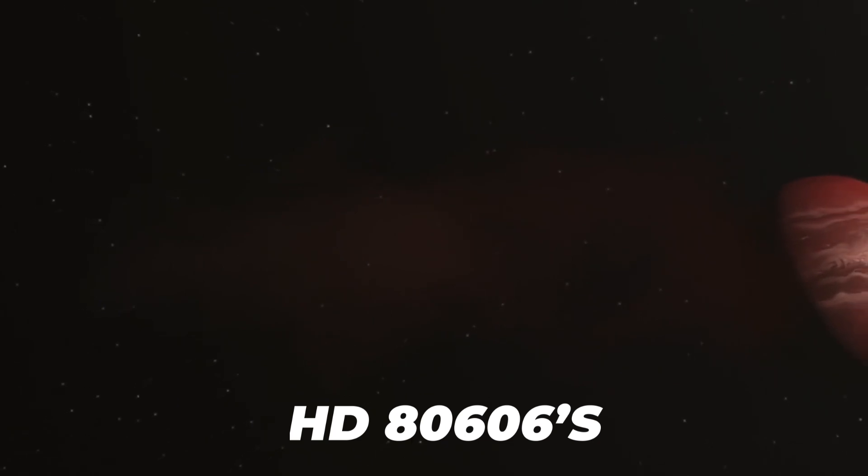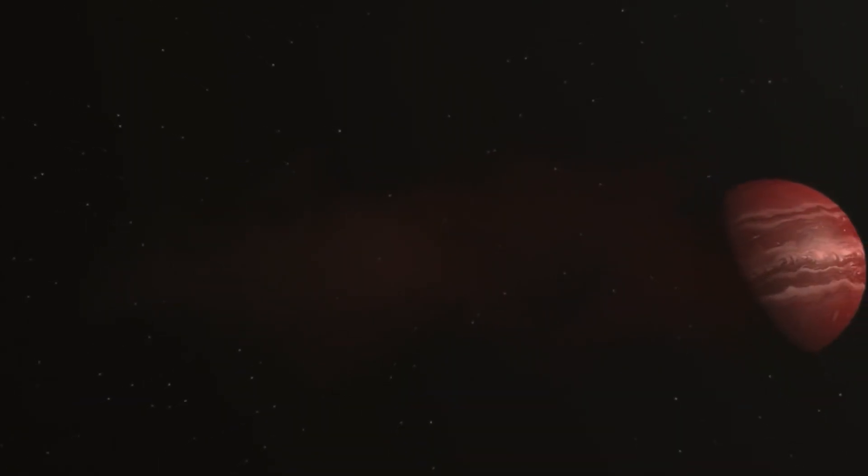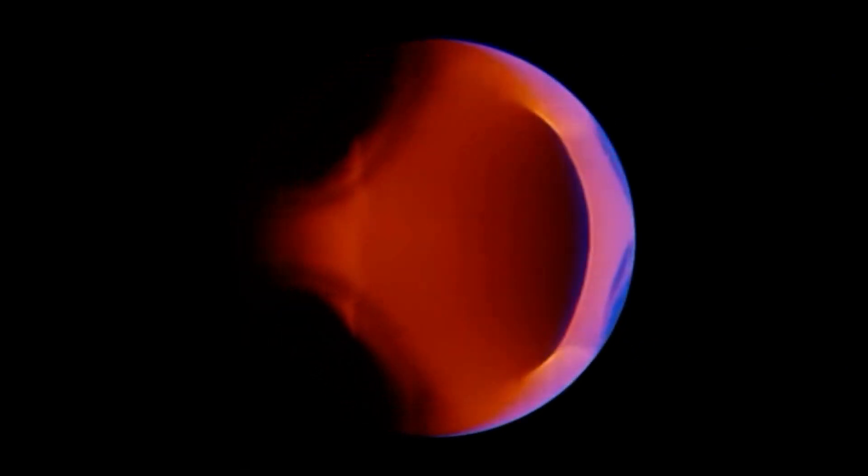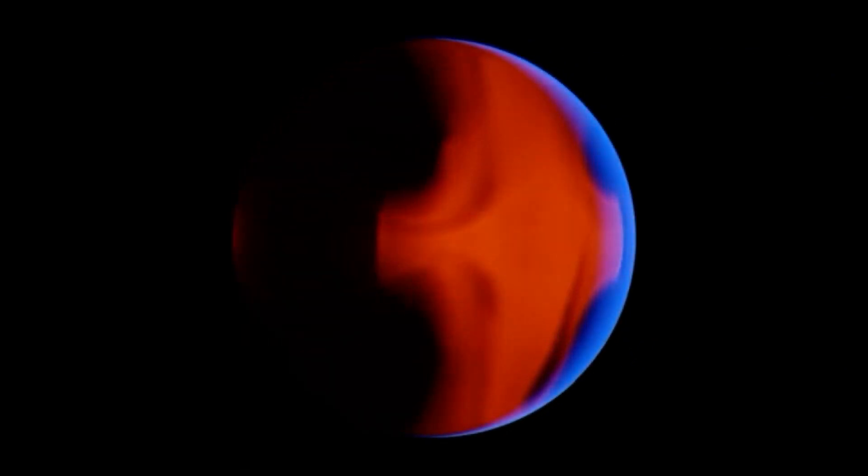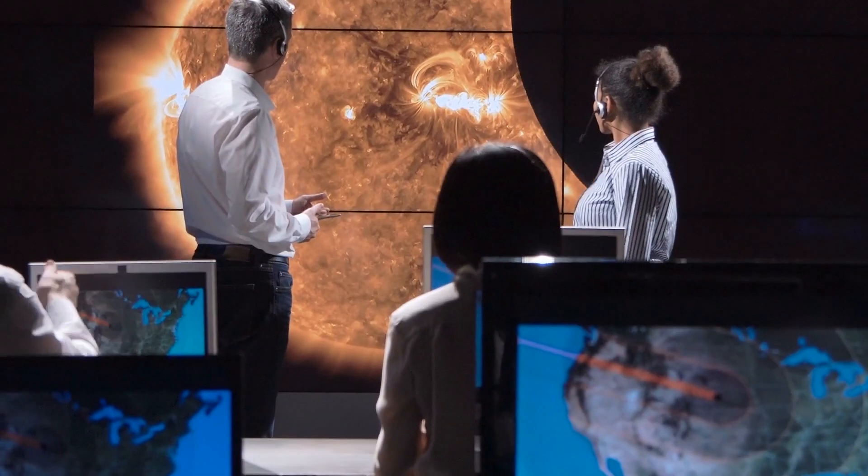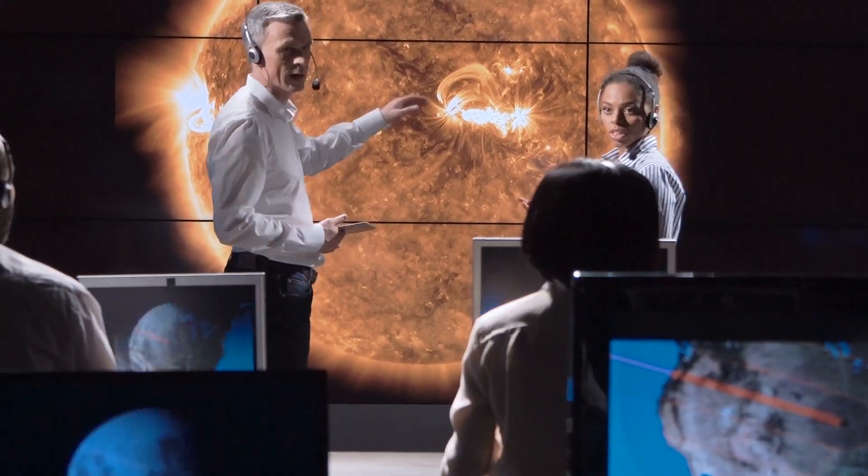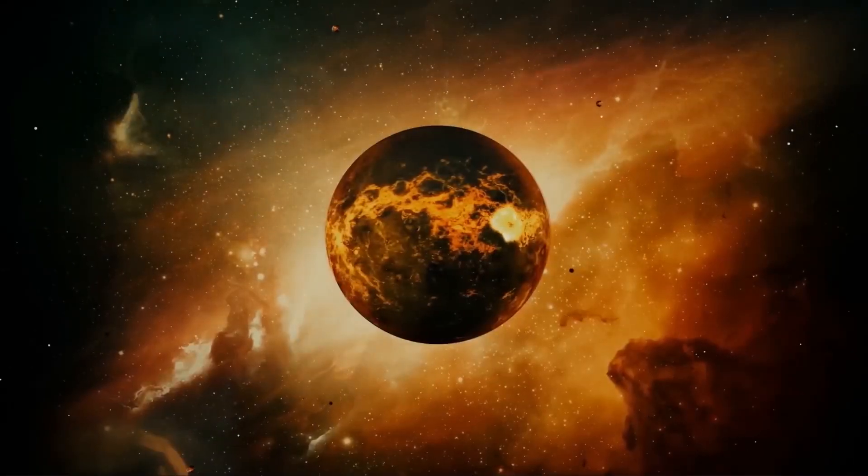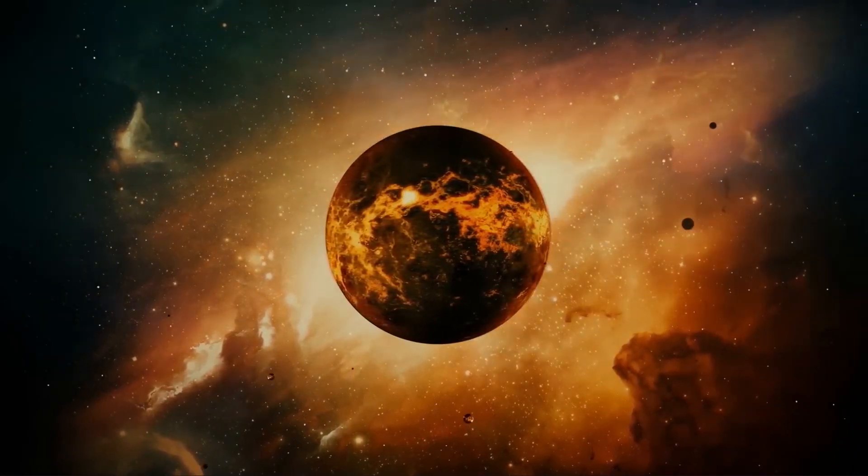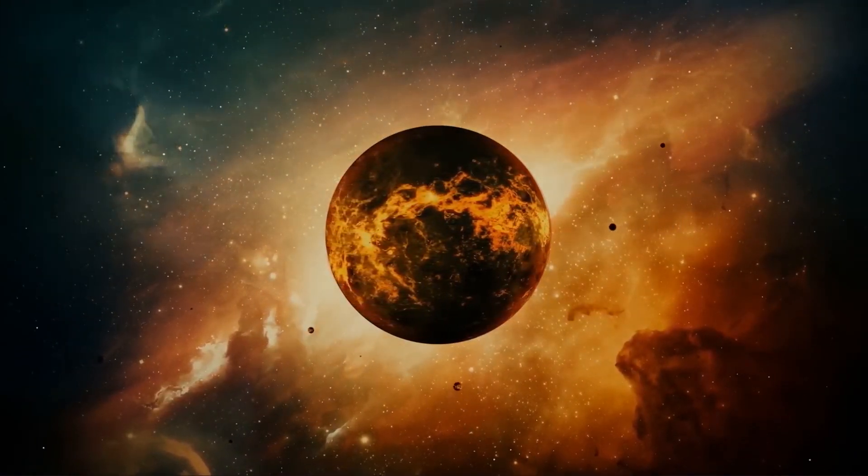However, you may think HD 80606's night side must be cooler than the day one, but hell no. Its night face is more scorching and hotter, even more than molten rock. This exoplanet is known to have a secret hotspot that's causing all these mind-boggling temperature variations. However, scientists assume this hotspot might be the result of extreme winds blasting like a blowtorch around its star periastron that generates shock, which later boosts the atmospheric heat.